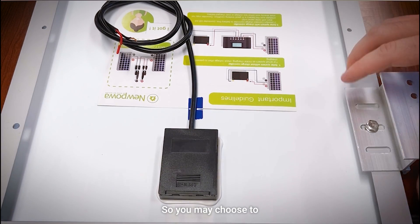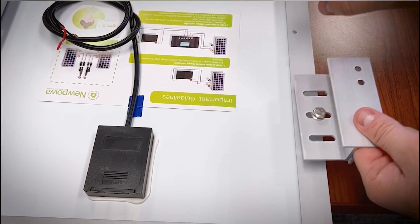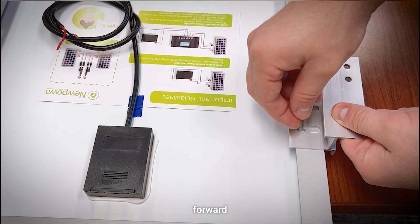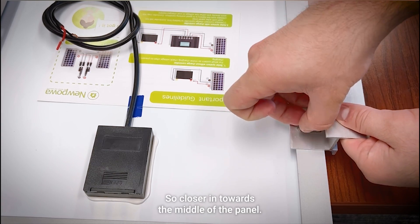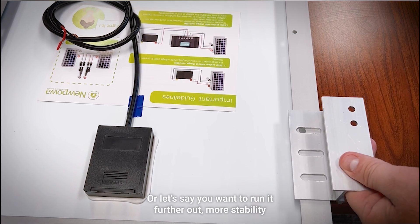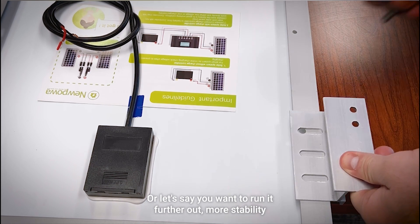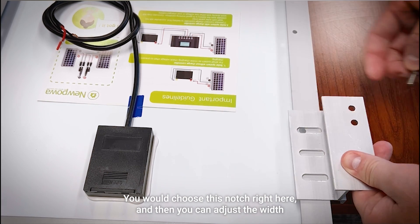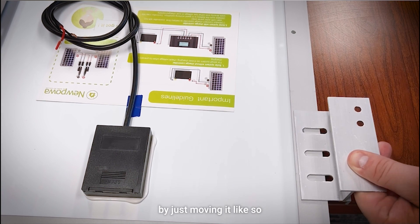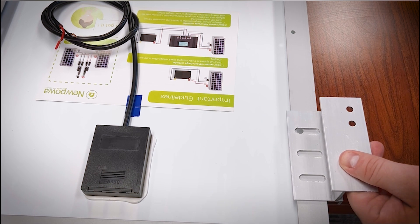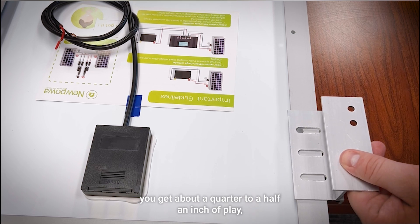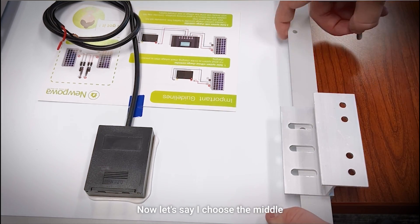So you may choose to run the mount forward, so closer in towards the middle of the panel, or let's say you want to run it further out for more stability, you would choose this notch right here. And then you can adjust the width by just moving it like so. You get about a quarter to a half an inch of play, which should be enough.